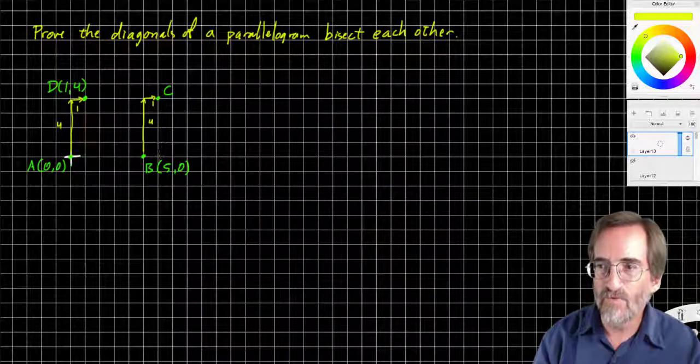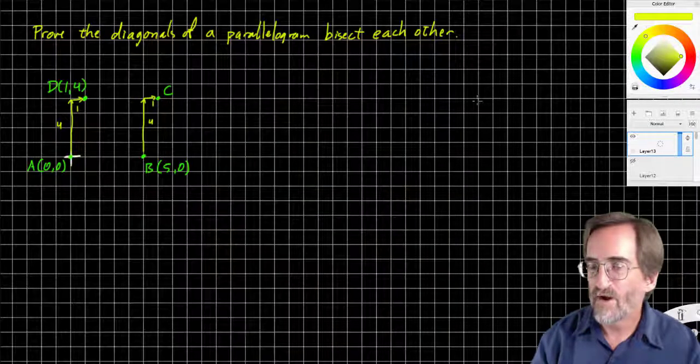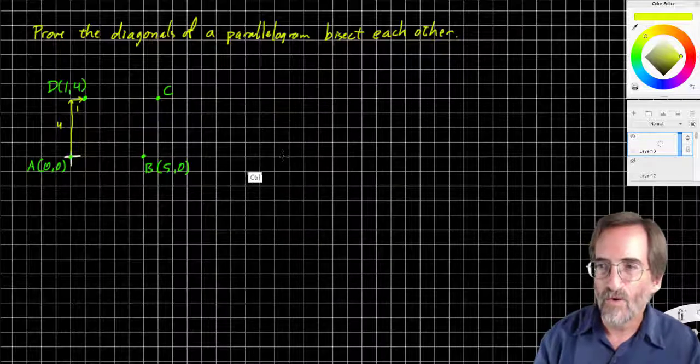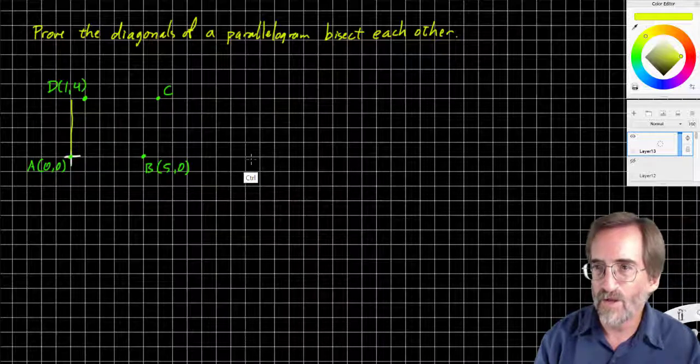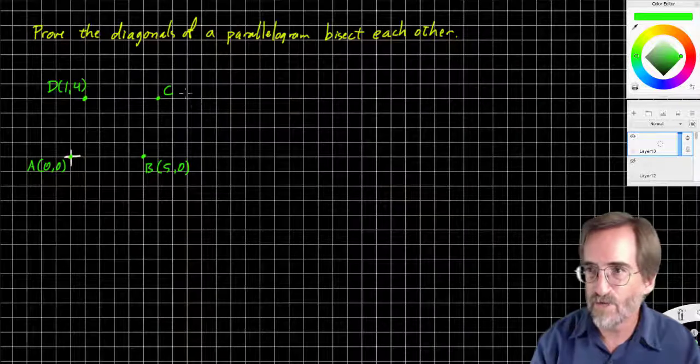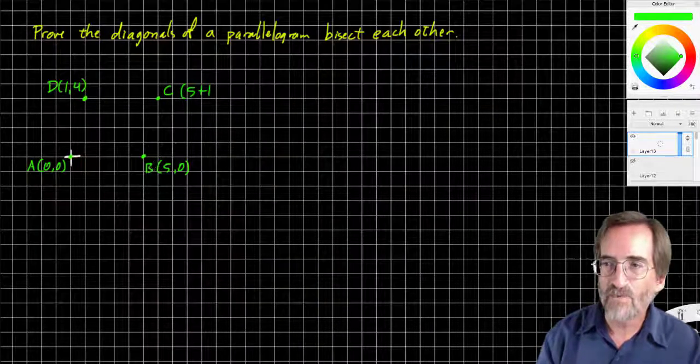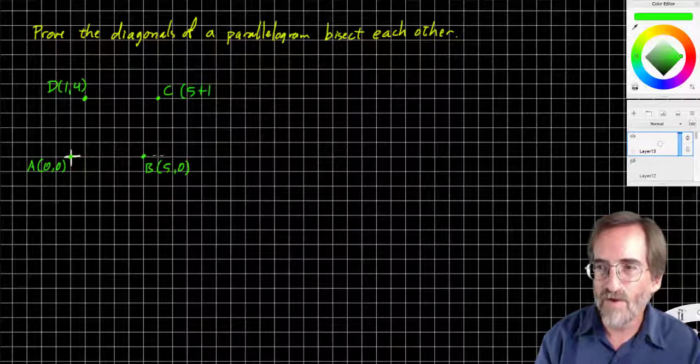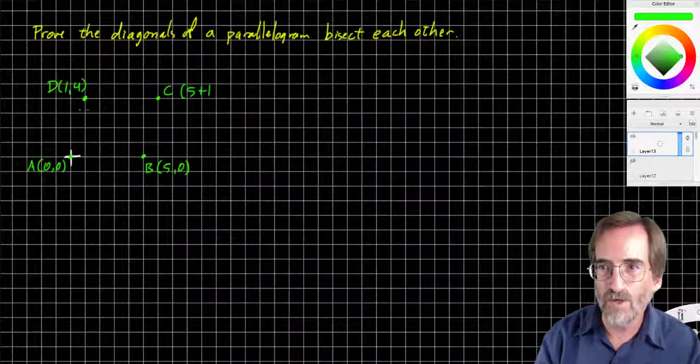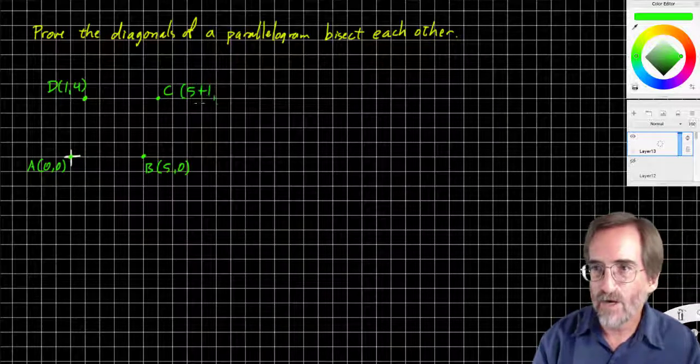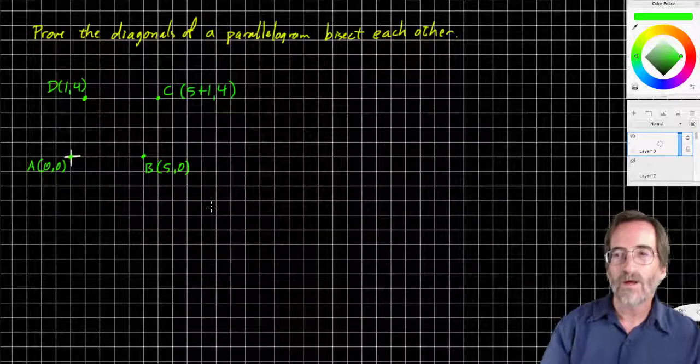I'm not gonna write it as six. I'm gonna write it as five plus one, and hopefully the reason will become apparent in a moment. So five plus one. So I went five, and I went one more because we went one to the right here. And then we're up four.